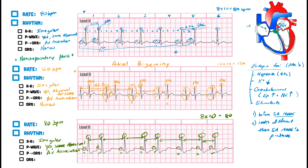Even if the SA node is firing, the signal goes through the appropriate conduction system: SA node → AV node → bundle of His → bundle branches → Purkinje. Even the ectopic focus follows that pathway to the ventricles. QRS complexes are narrow — less than three little boxes.